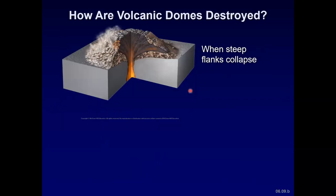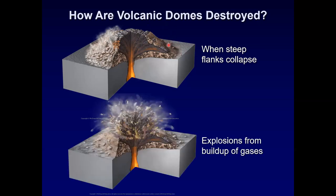How are volcanic domes destroyed? The flanks get steeper and steeper over time with more magma, and then eventually they can collapse. That collapse unleashes an avalanche of ash and blocks of the dome itself. The dome explosion produces projectiles, and you can also have pyroclastic flows associated with that from the buildup of gases.